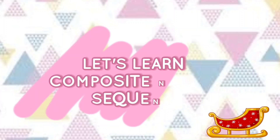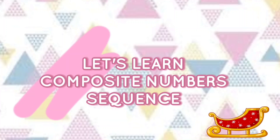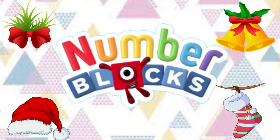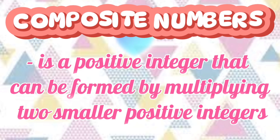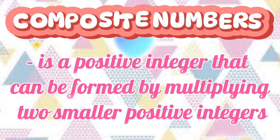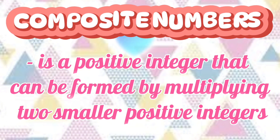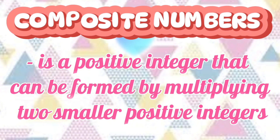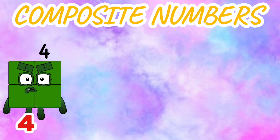Hi guys, let's learn composite number sequence using number blocks. A composite number is a positive integer that can be found by multiplying two smaller positive integers. Composite numbers are: 4,